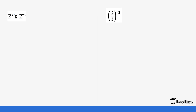We have two power three times two power negative three. When we have the same base with multiplication, we add the indices. So this becomes two power (three plus negative three). Three plus negative three gives us zero. So two power zero equals one — remember that rule.